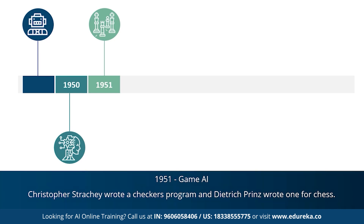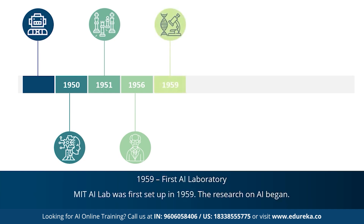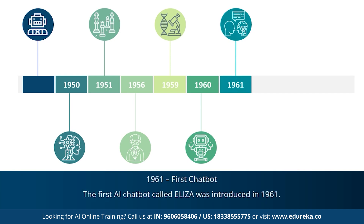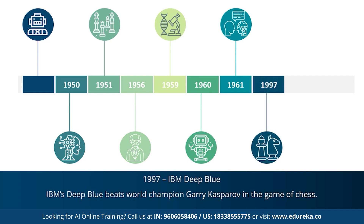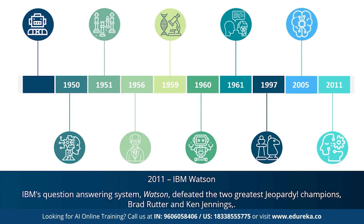These programs were later rewritten and redone in a better way. 1956 marked the most important year for artificial intelligence — John McCarthy first coined the term 'artificial intelligence.' This was followed by the first AI laboratory, the MIT AI lab, set up in 1959, dedicated to AI research. In 1960, the first robot was introduced to the General Motors assembly line. In 1961, the first AI chatbot called Eliza was introduced. In 1997, IBM's Deep Blue beat world champion Garry Kasparov in chess. In 2005, autonomous robotic car Stanley won the DARPA Grand Challenge. In 2011, IBM's Watson defeated Jeopardy champions Brad Rutter and Ken Jennings.